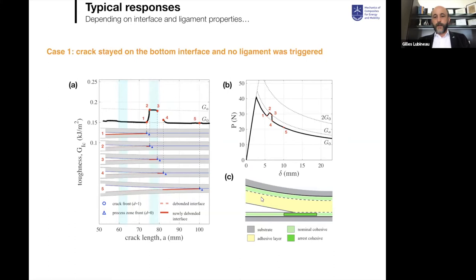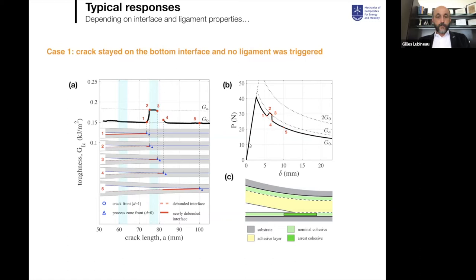In the classical response, a crack starting at the bottom propagates along the bottom interface and passes through the dark green region without change. When it encounters a tougher region, you see an improvement in the P-delta DCB curve. When the crack passes completely across the dark green area, the response returns to baseline. This is the classical response — nothing special in the system.